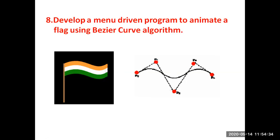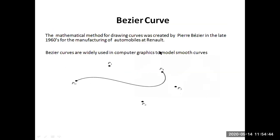A Bezier curve is always drawn with four points, as you can see here on the diagram. The mathematical method for drawing this curve was created by Pierre Bézier in the late 1960s, and this idea came out as the Bezier curve algorithm. This curve is widely used in computer graphics to draw smooth curves, obtained by considering only four points: P0, P1, P2, P3.